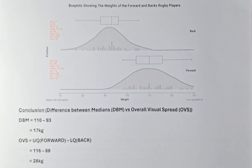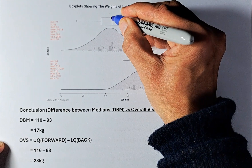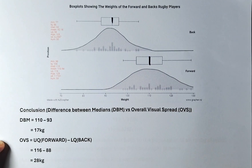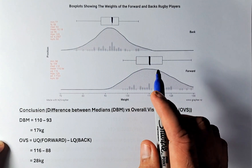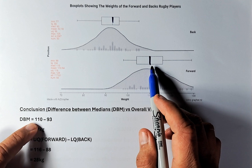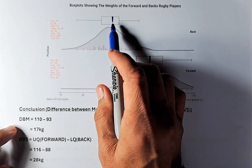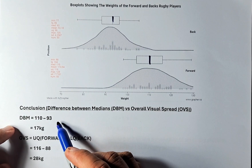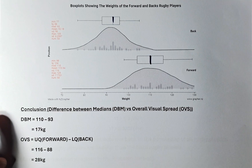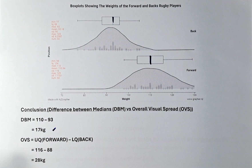First thing we need to know is how to calculate DBM, the difference between medians. The median is the number here, so we are going to calculate the difference between those two numbers. The median for the forwards is 110 kg and the median for backs is 93 kg. The numbers can be found here and we calculate it is going to be 17 kg.